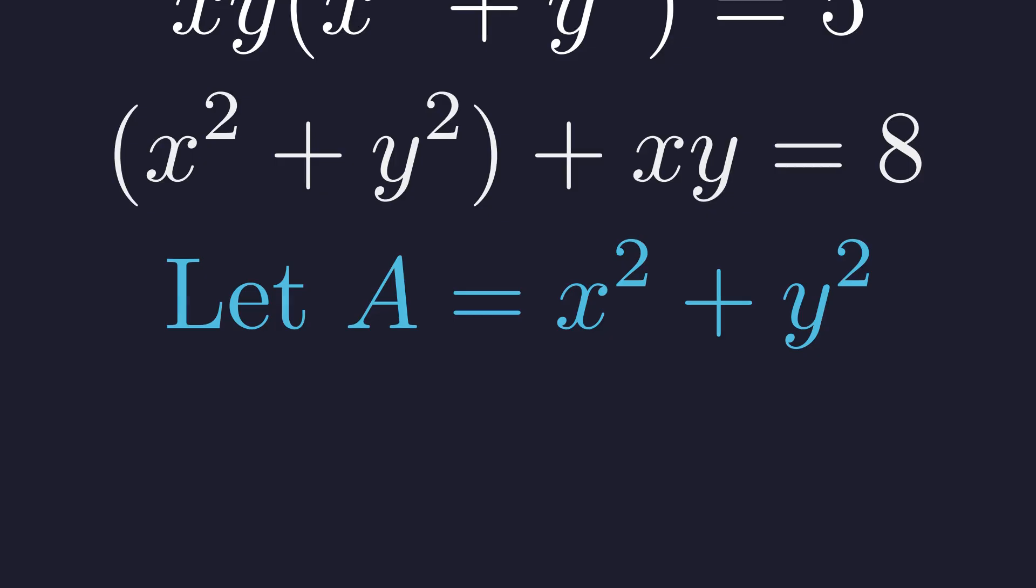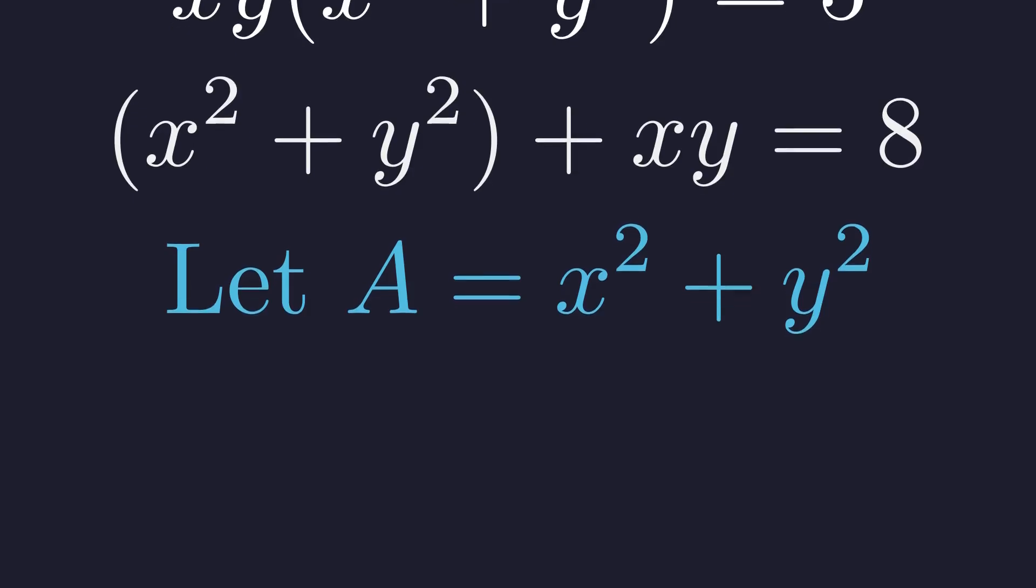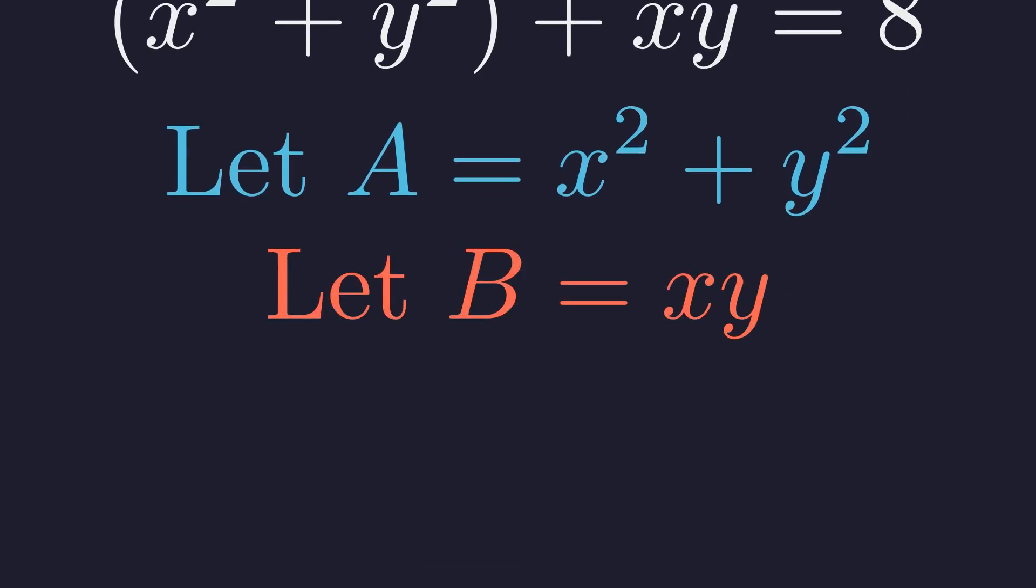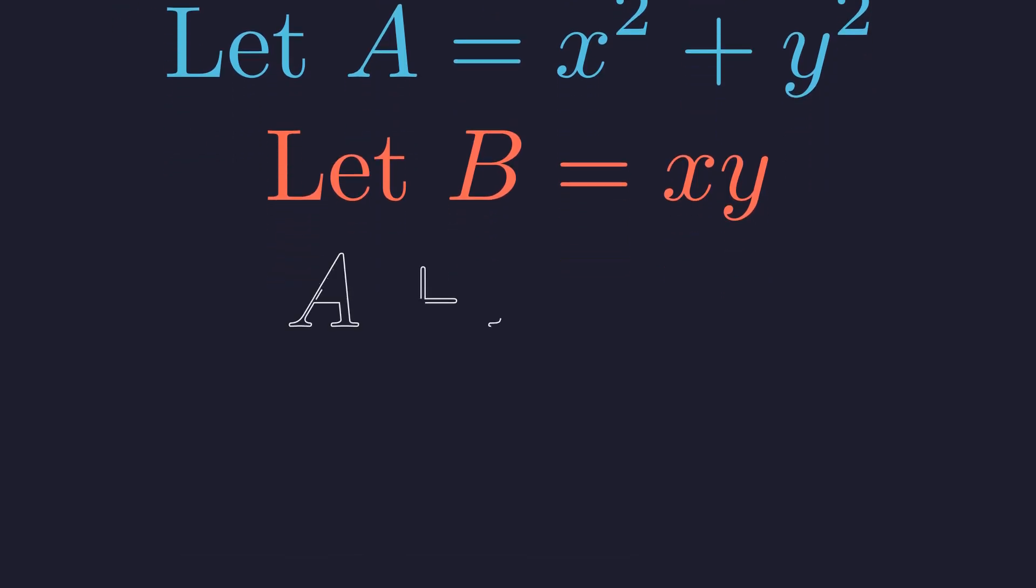To clean this up, let's introduce a substitution. Define A to be x squared plus y squared. And define B to be xy. Now we substitute A and B into the first equation. And we get this beautifully simple relationship. A plus B equals 8.